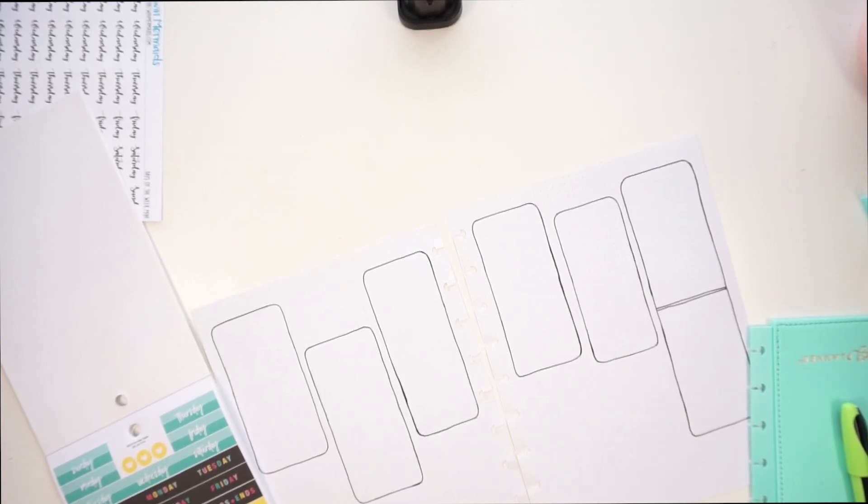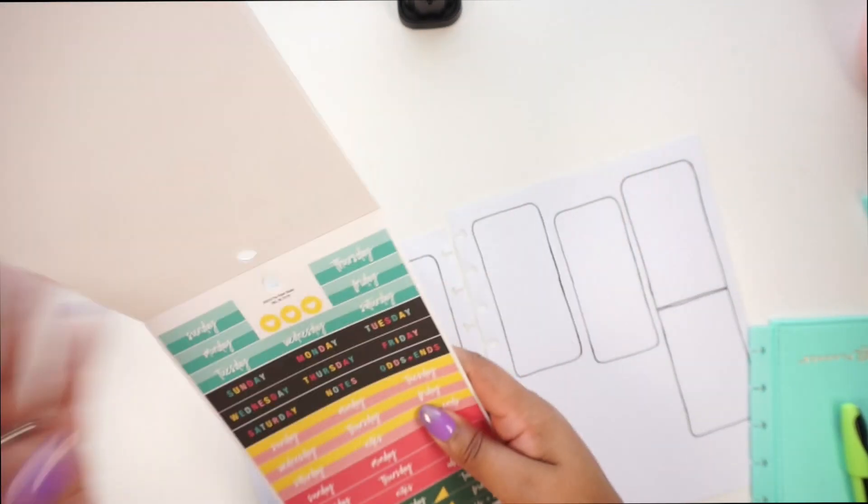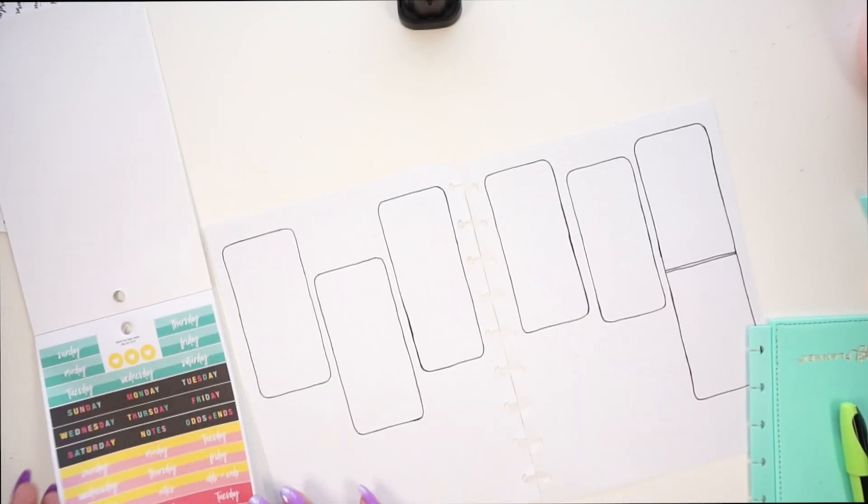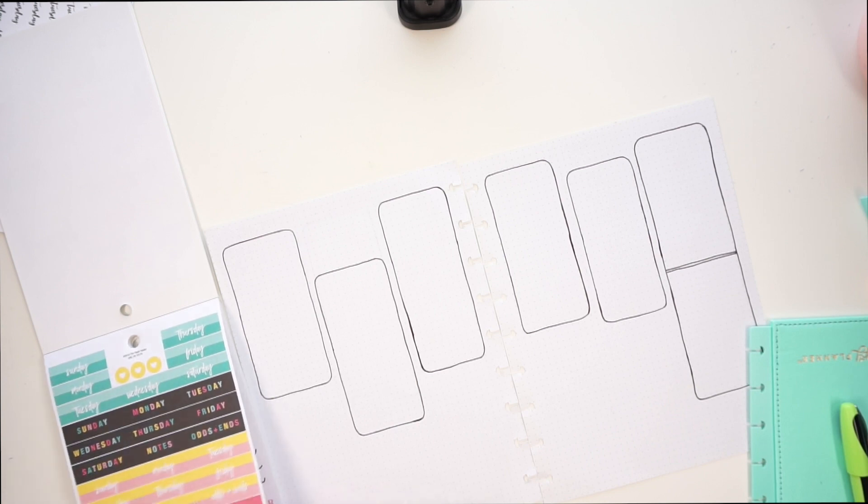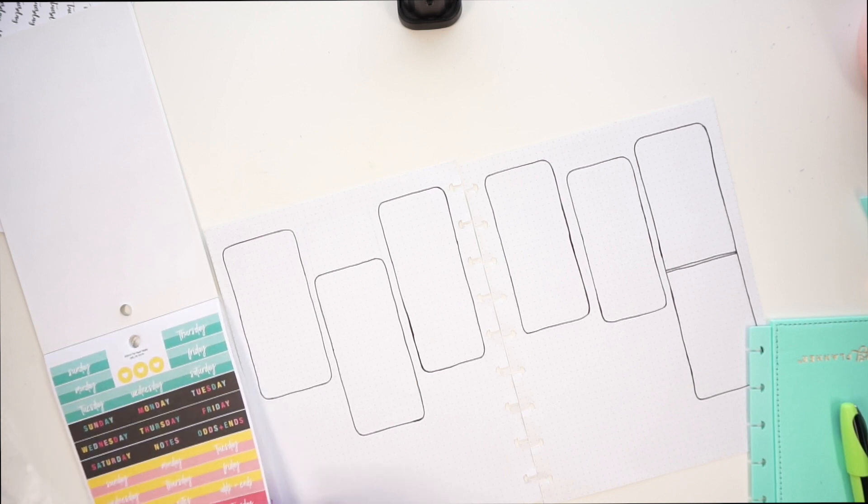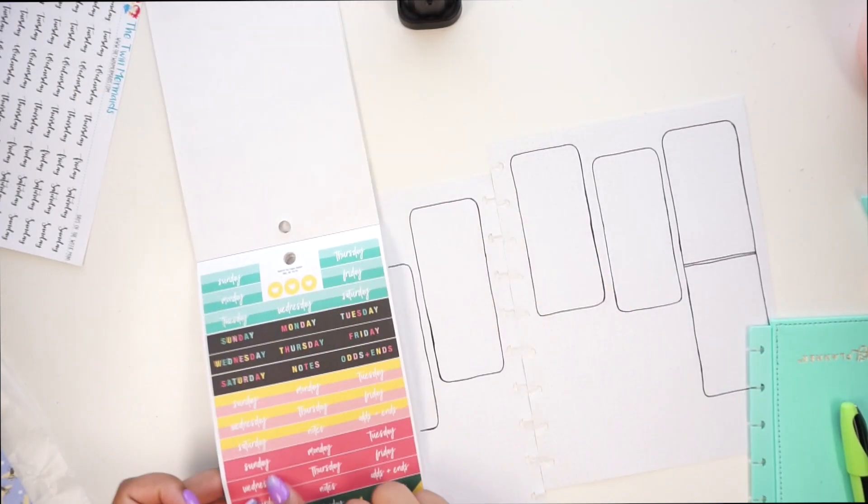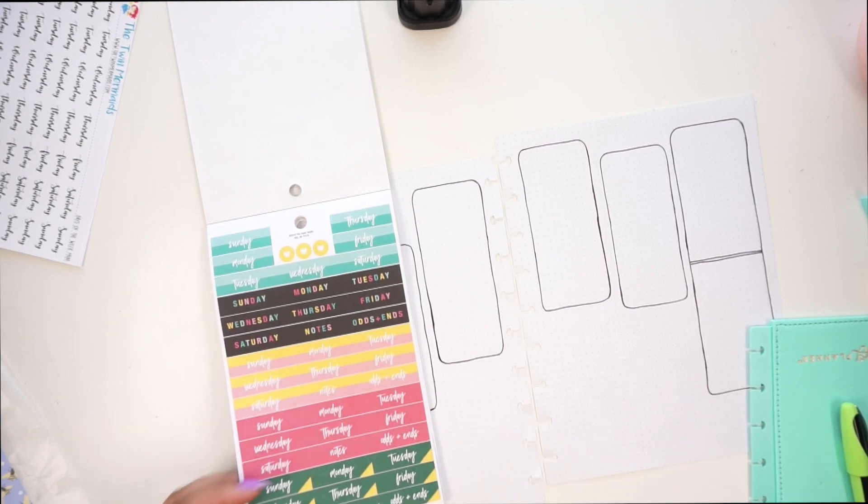Let's see. So I am in the Agenda 52 calendar book and I'm on the days of the week. I feel like this might tie stuff in better, so I'm going to use these here. It's kind of a coral color.